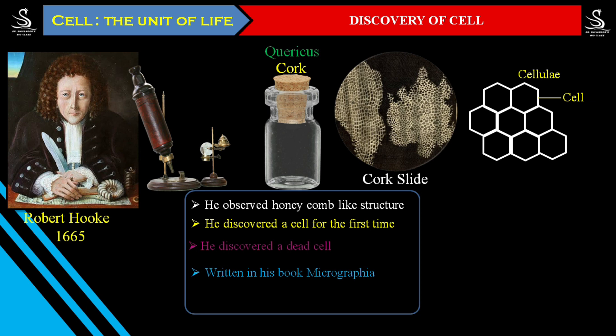The study of the entire cell is called cytology, and cytology is a branch of biology. It was first begun by Robert Hooke by discovering the dead cell. That is why Robert Hooke is also called the Father of Cytology. After that, every scientist started to observe cells and find out more things related to them.